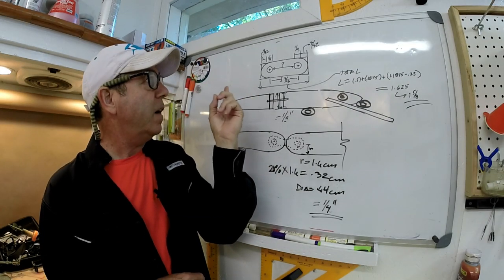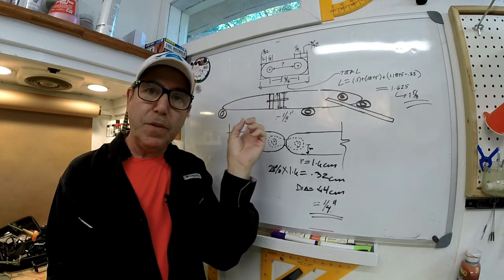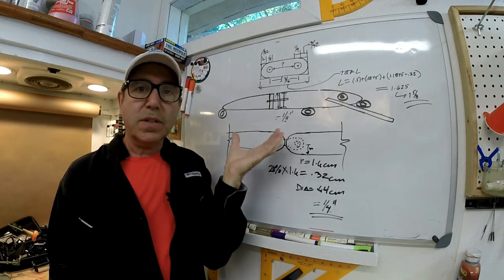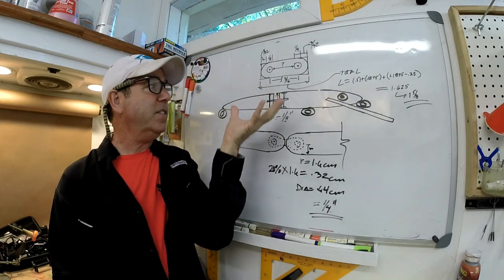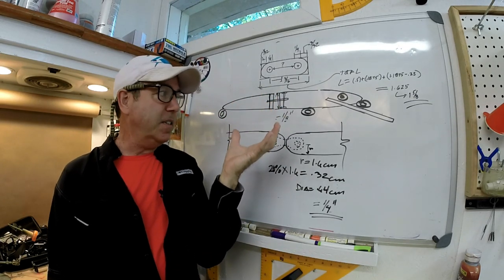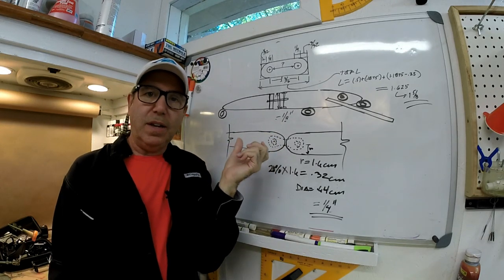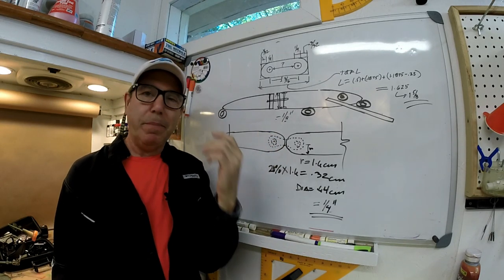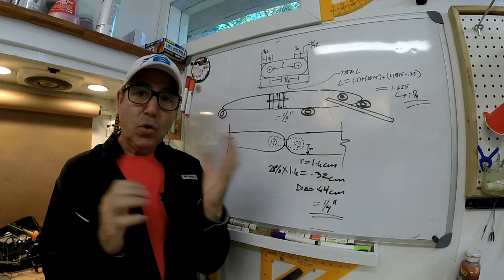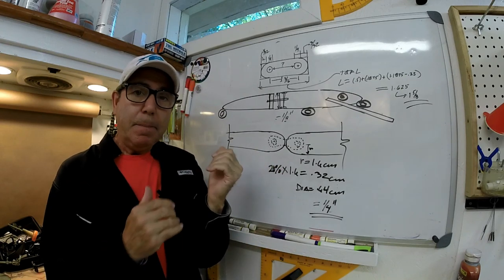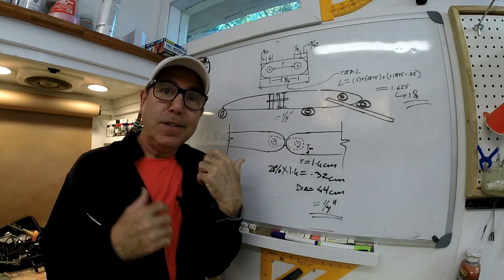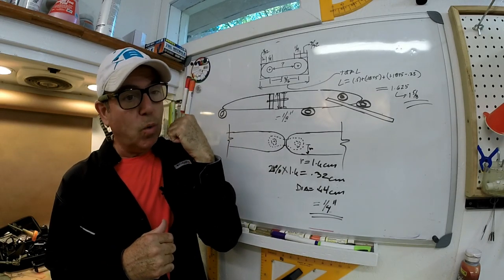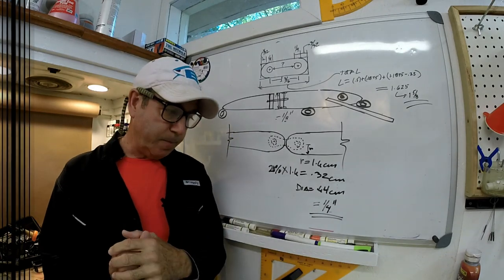Question number one. People have pointed out that this double hinge system has been used before in lures, and I know that. It's not new. Double hinges have been around for a couple thousand years and they've been used in lures since people have been making lures really. So I hope I didn't unintentionally make it sound like I was coming up with something brand new. I'm not. This is just something I'm using because I think it'll work well on this particular lure.